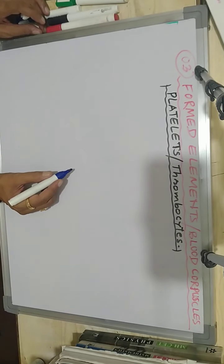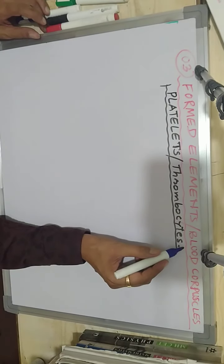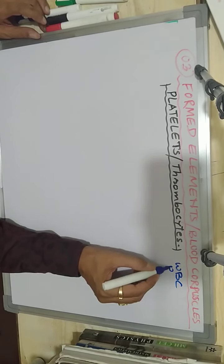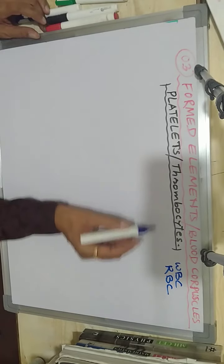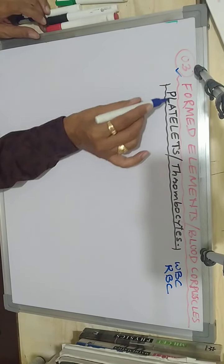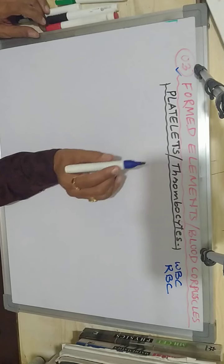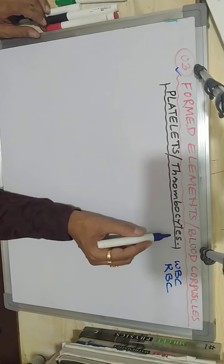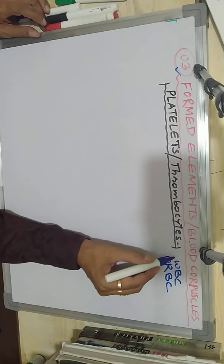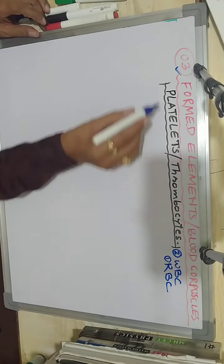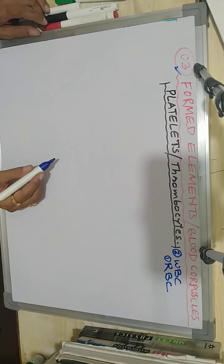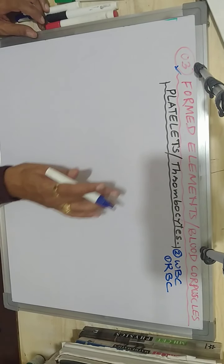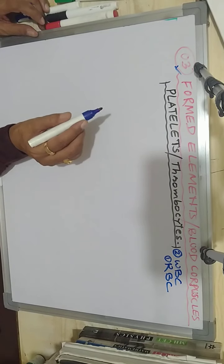Now we come to the third type of blood corpuscles. We have already completed WBC and RBC. Now we come to the third formed element, which is called platelets or thrombocytes. So what are the characteristic features of platelets?